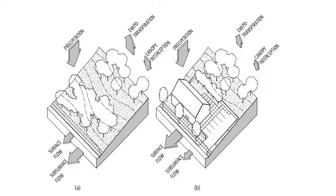Higher runoff velocities, which also reduce the time it takes the peak discharge to reach a stream or drainage channel, result from smoother surfaces, such as pavements, which create less friction to slow runoff flow. Increased velocities and or shorter overland travel times also provide less opportunity for infiltration.